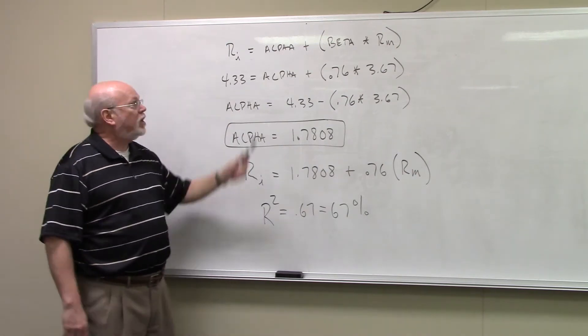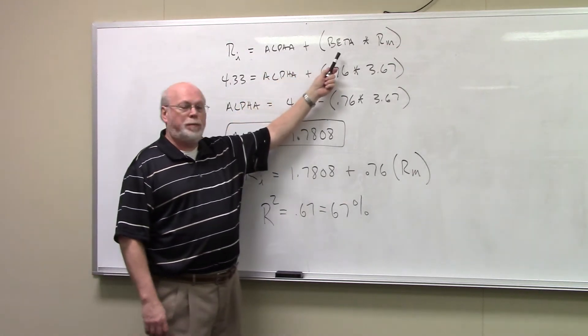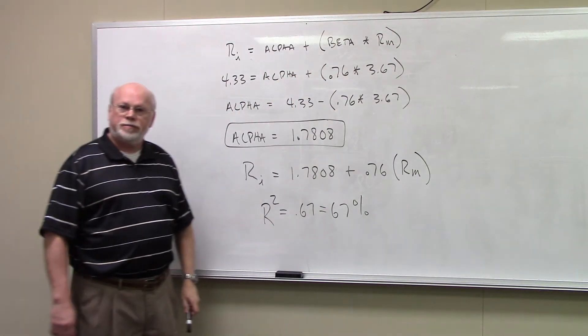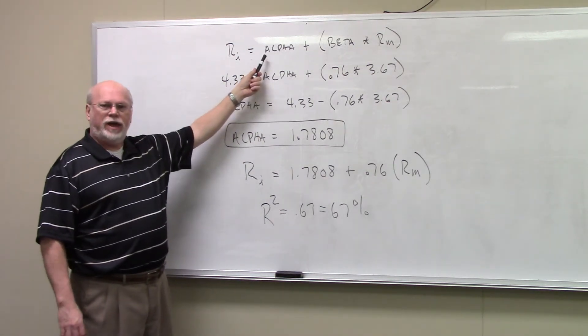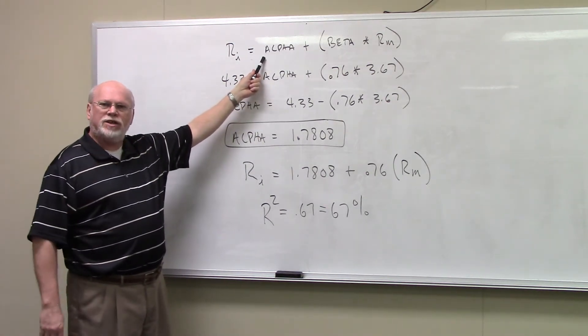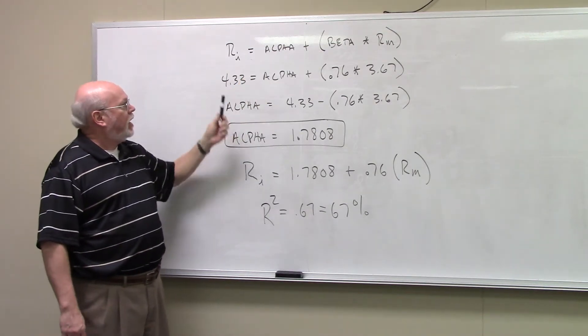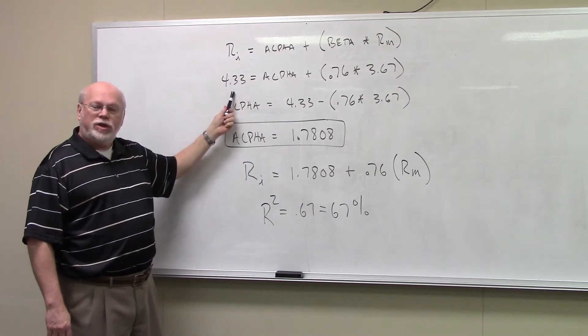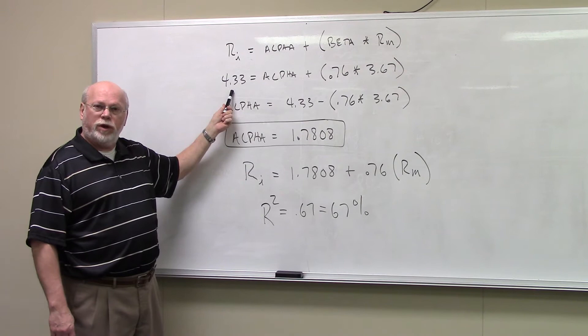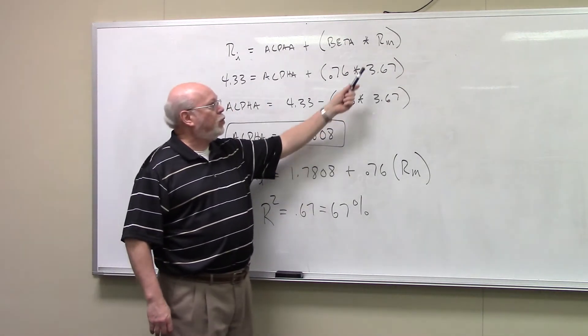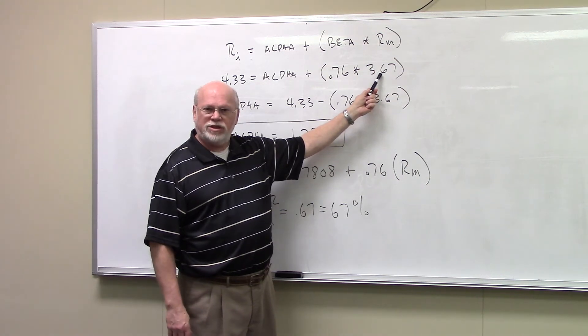Simple linear regression will tell you that's going to be equal to alpha plus beta times the return to the market. In this case, we don't know what alpha is. There's no direct statistical way of determining this; it's a derivative kind of process. But we do know what the mean return, the expected return was for the security. It was 4.33. And we know what the expected mean return is for the market. It was 3.67.